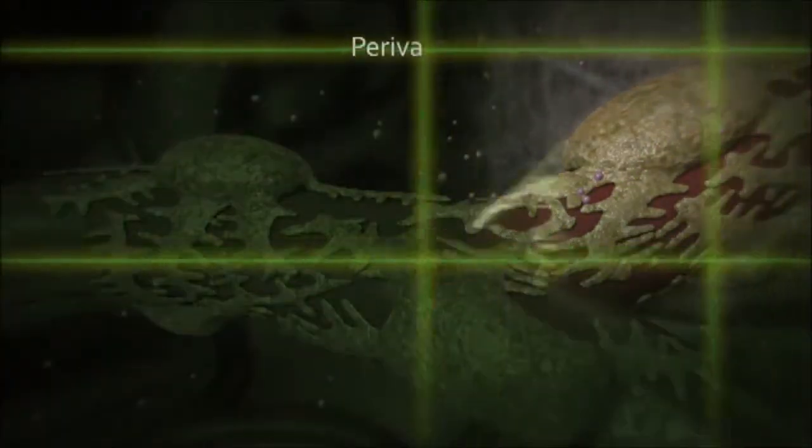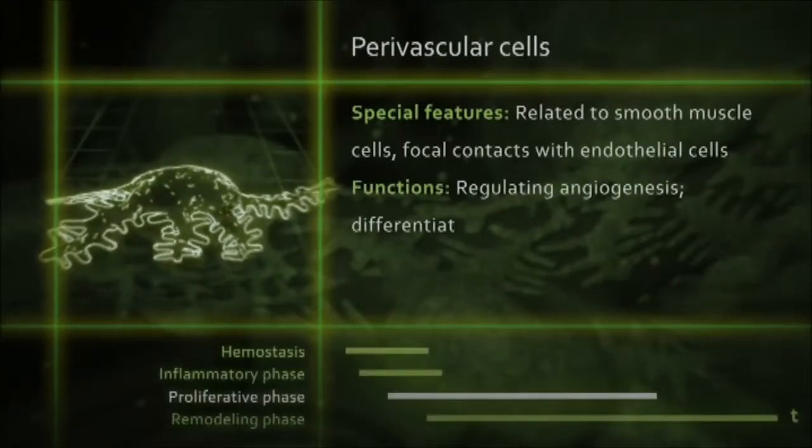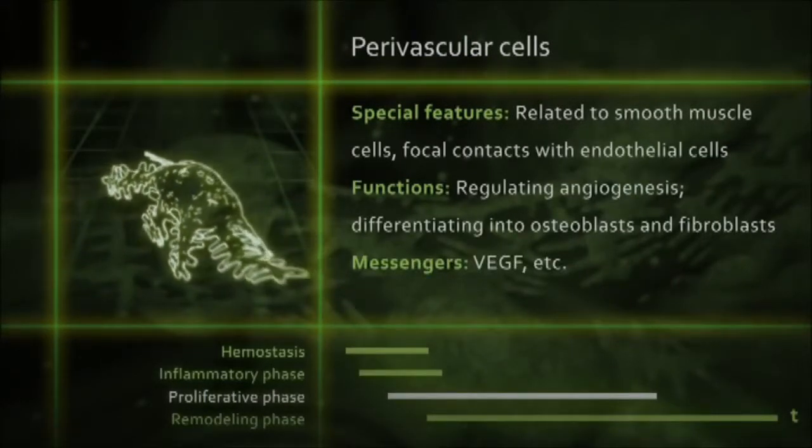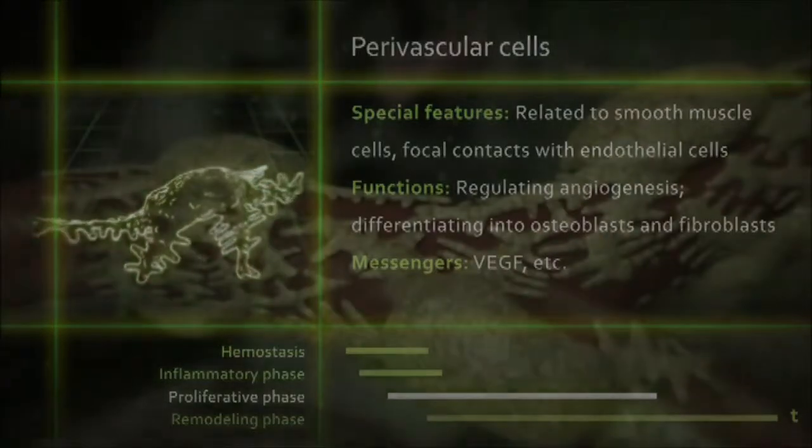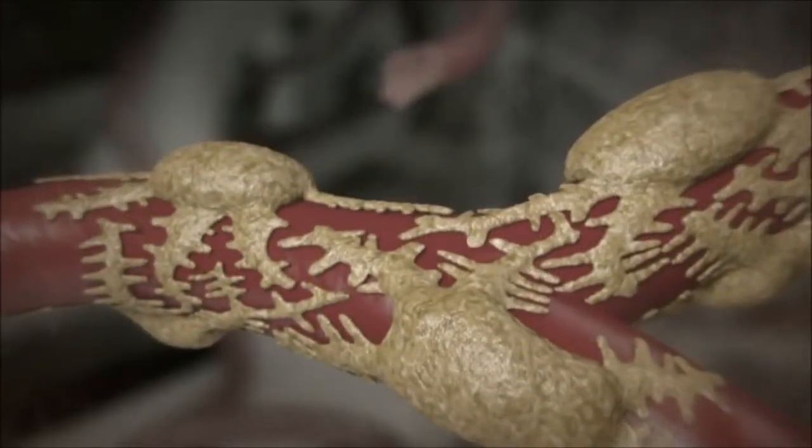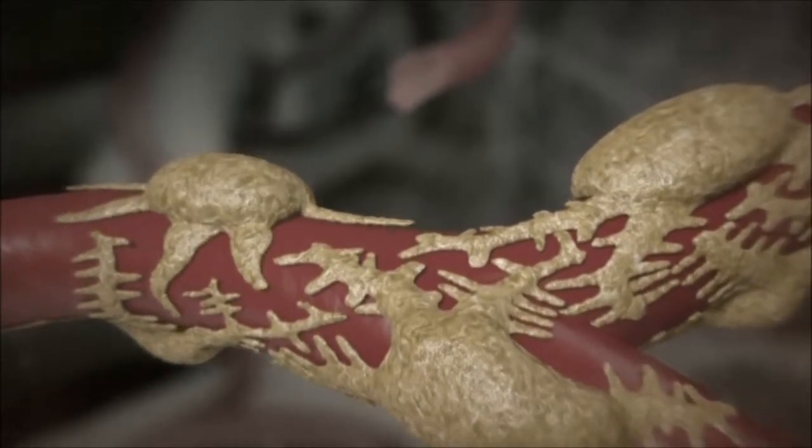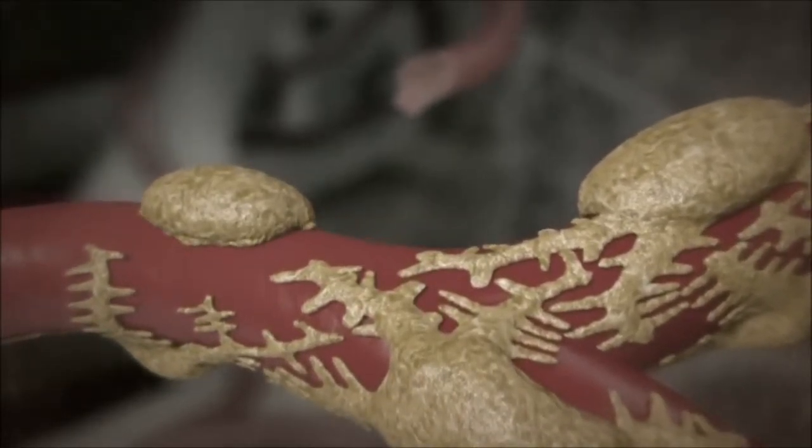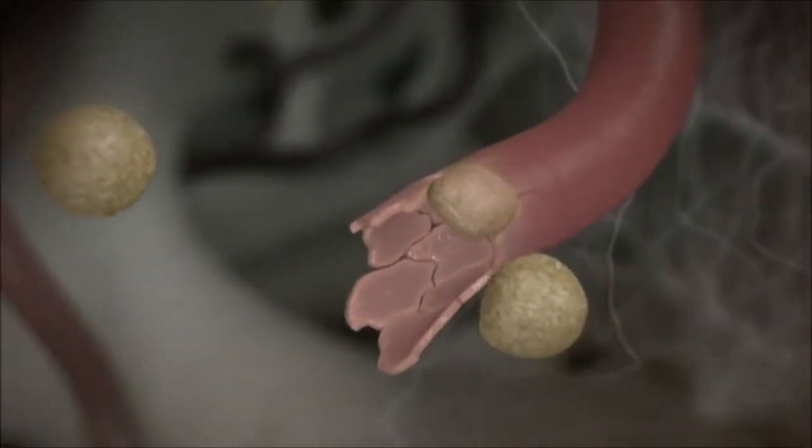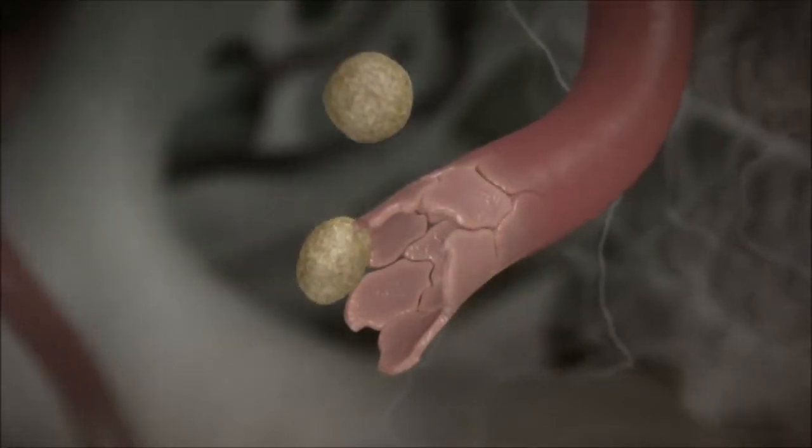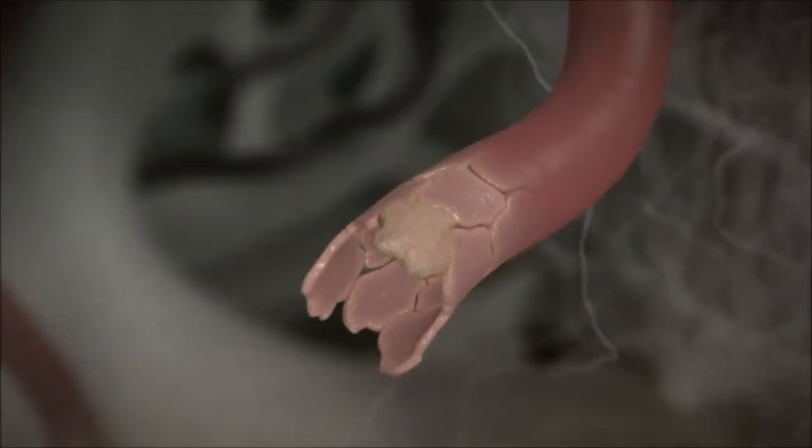Perivascular cells are mesenchymal stem cells found on blood vessels. They migrate along the VEGF gradient into areas of low partial oxygen pressure. Here they form new blood vessels that finally integrate into the existing vascular network. Angiogenesis restores the oxygen supply and forms the foundation of bone healing.